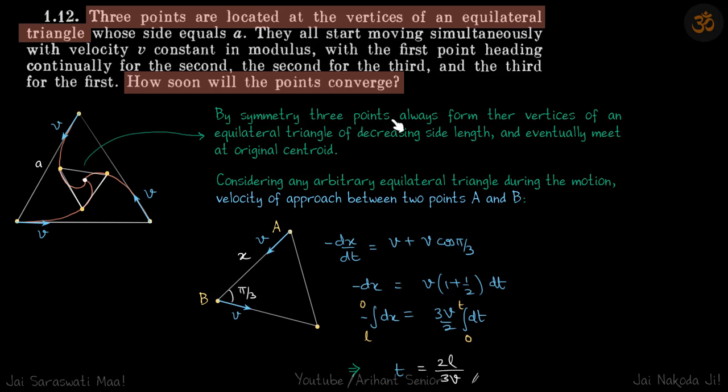By symmetry, the three points always form the vertices of an equilateral triangle of decreasing side length, and eventually they will meet at the original centroid. As the distance between them decreases, they will meet at the center.